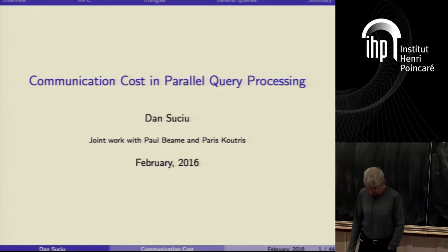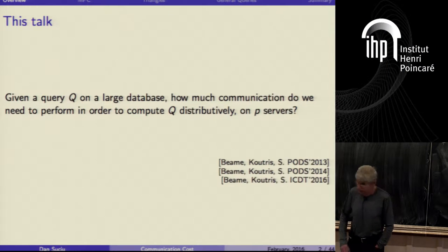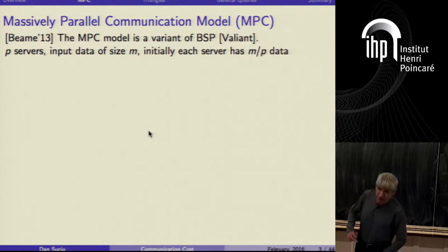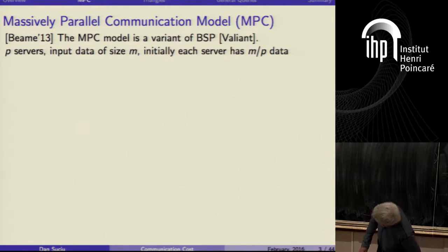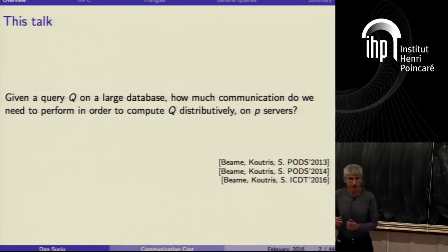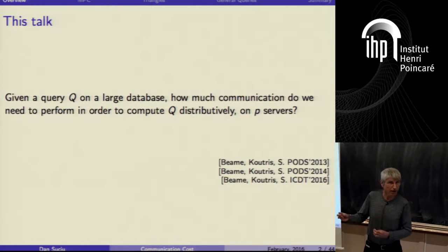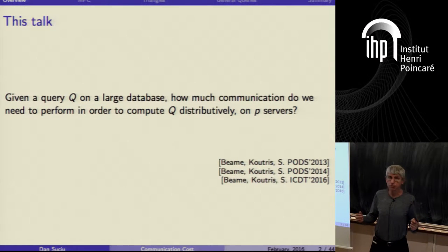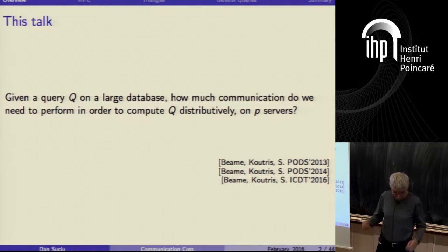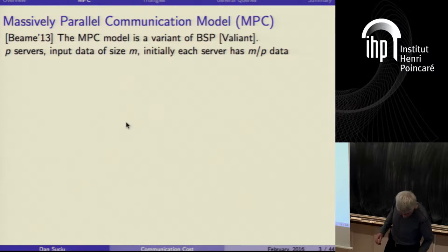Good morning everyone. Today I'm going to talk about a very simple question: if we have data that is distributed on P servers, and P is a pretty large number, then how much communication do we need to pay? How much communication do we need to do in order to answer a particular query? That's a fundamental question. Let me start by defining the model.